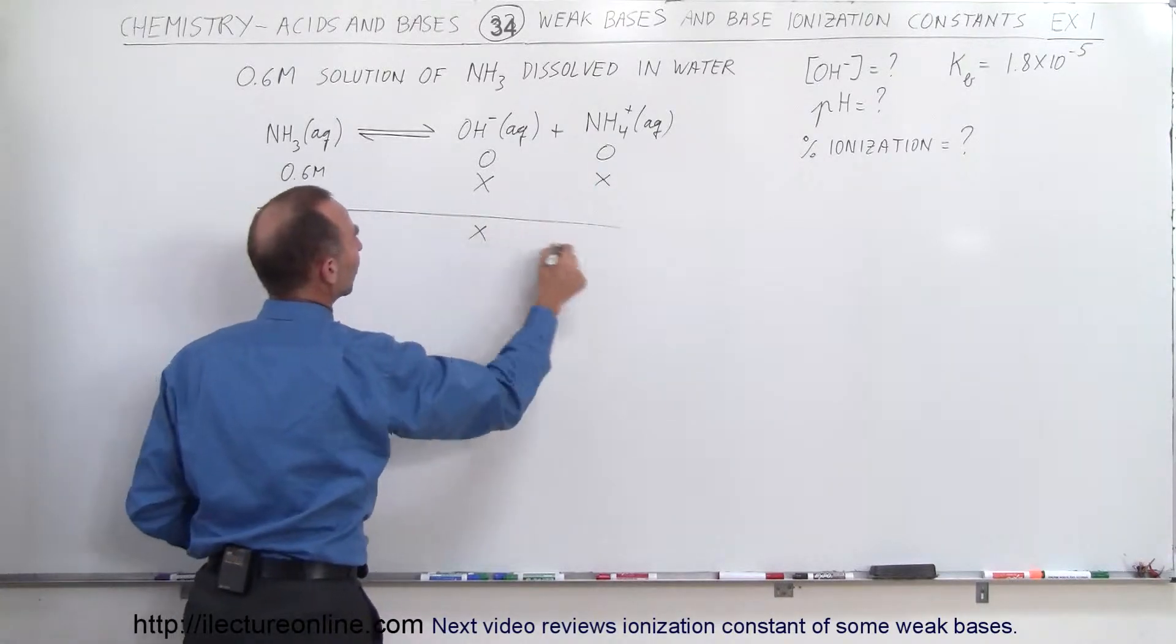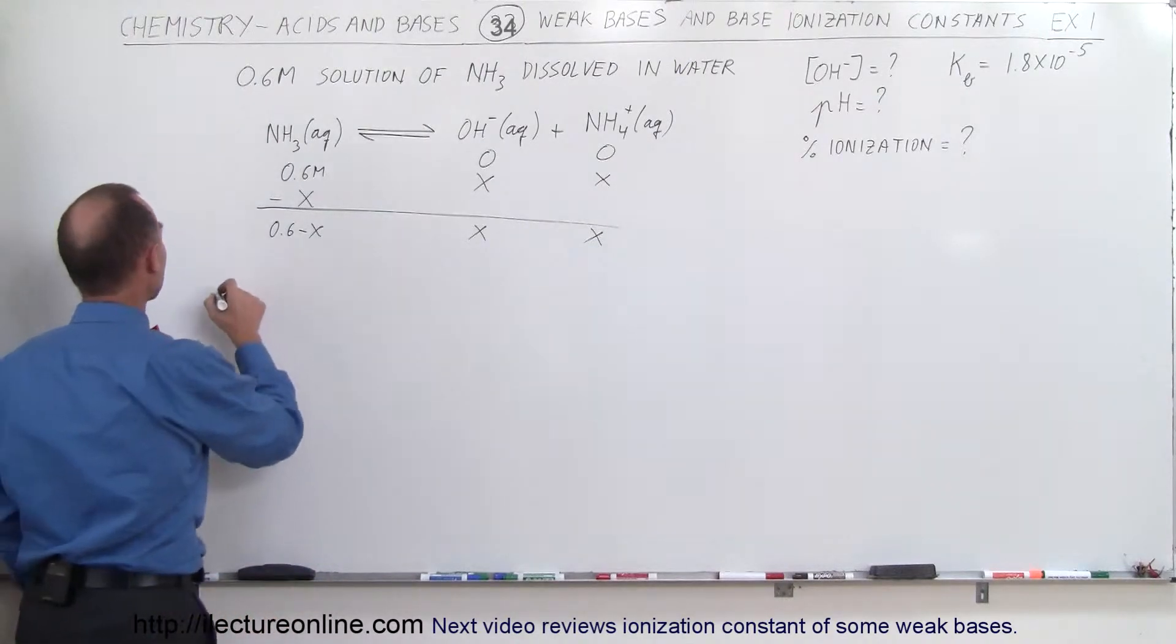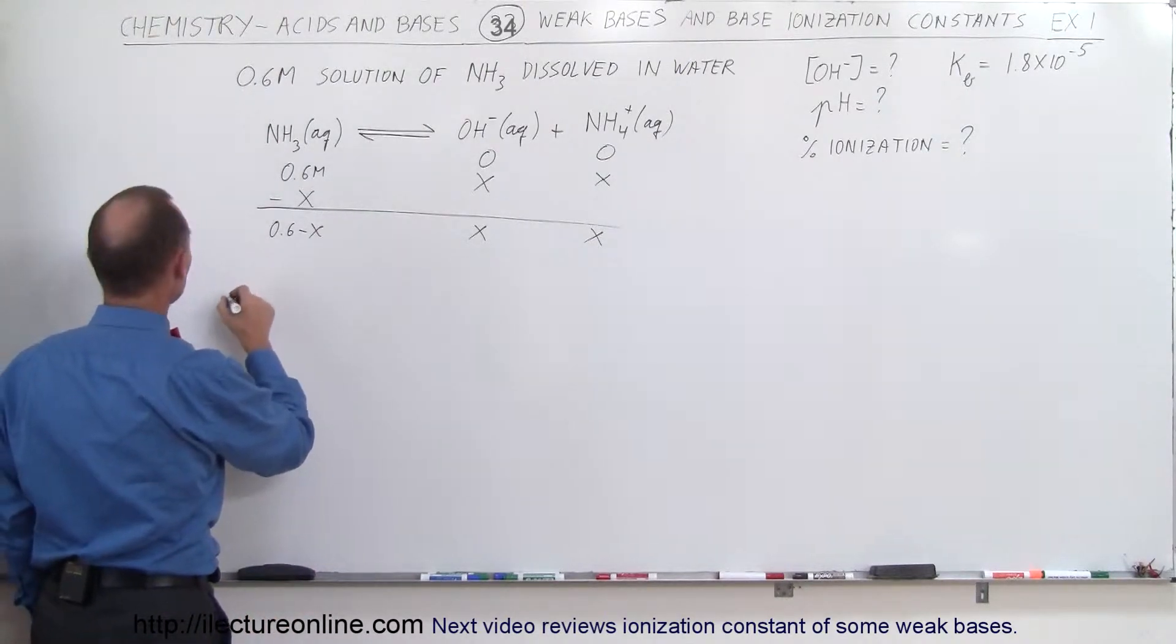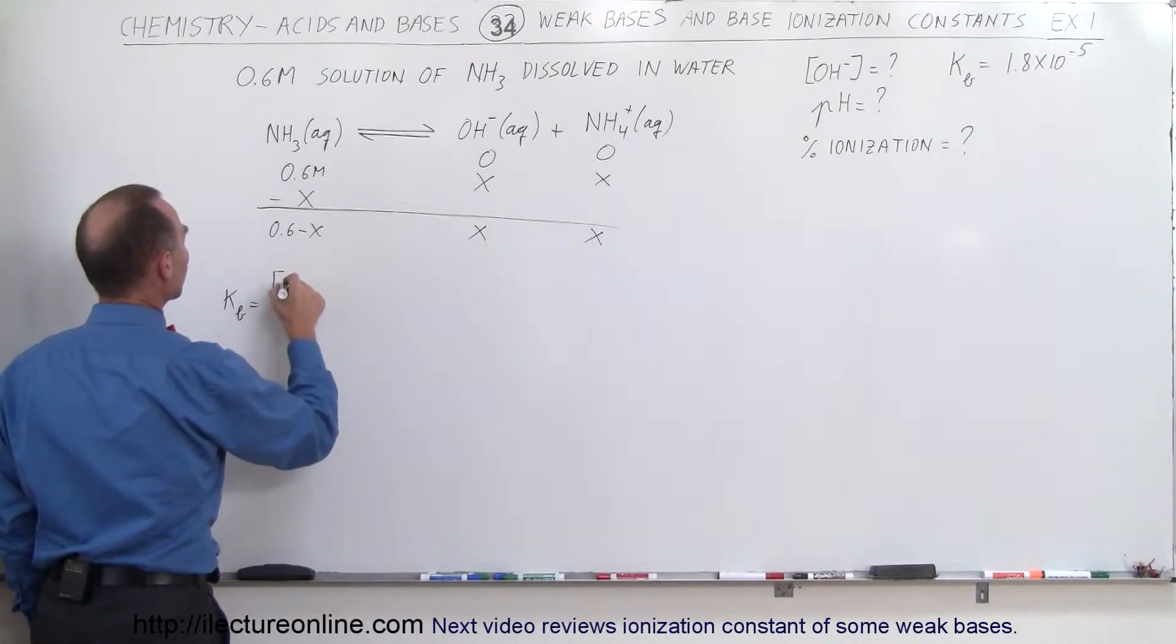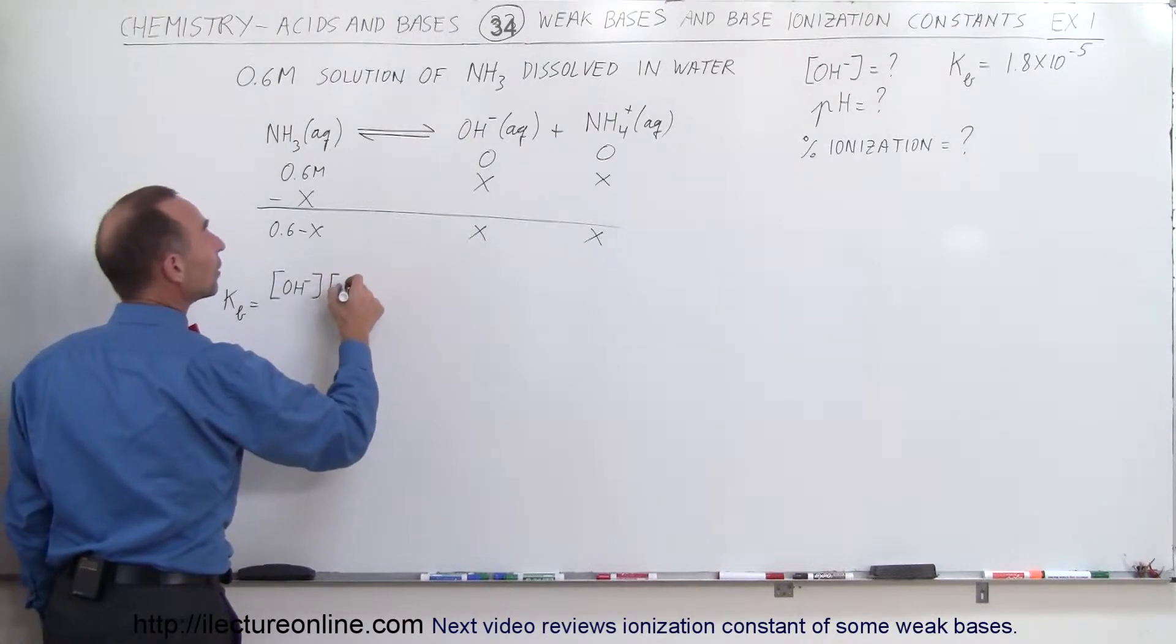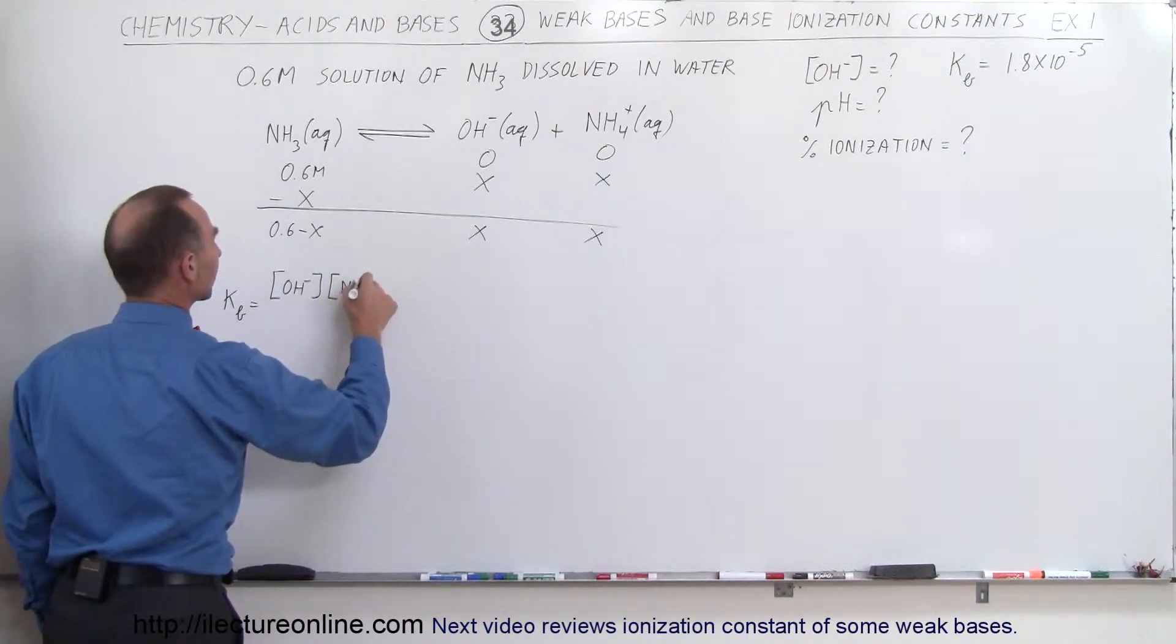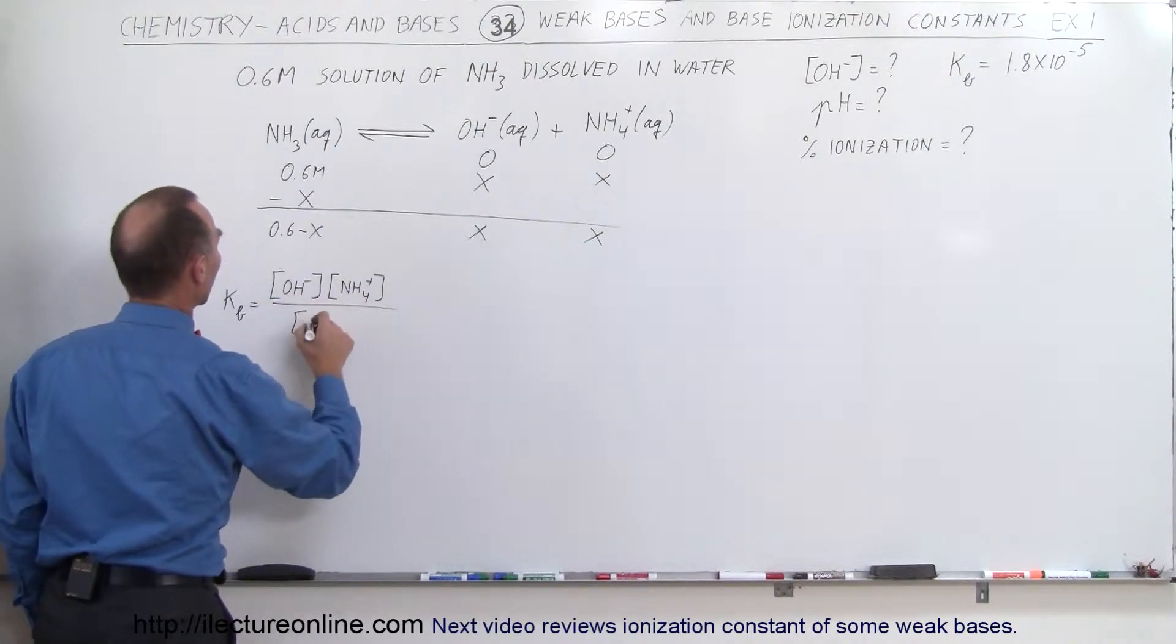And then we do the same as we do with acids, we know that the ionization constant, K sub B, is equal to the concentration of the hydroxide ion times the concentration of the conjugate acid divided by the concentration of the base.